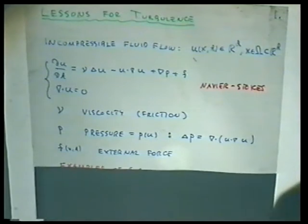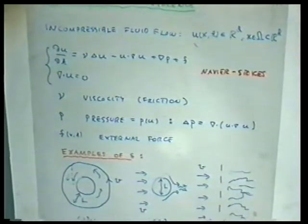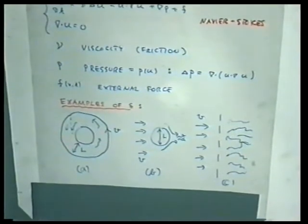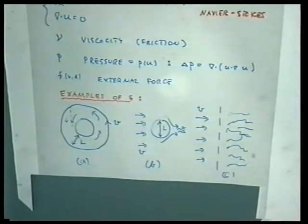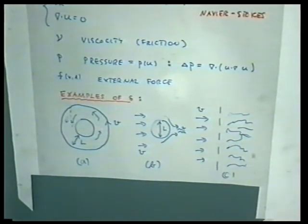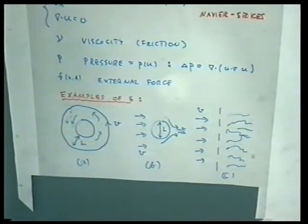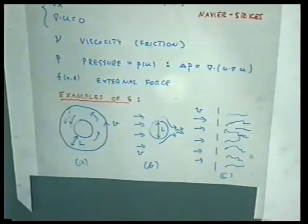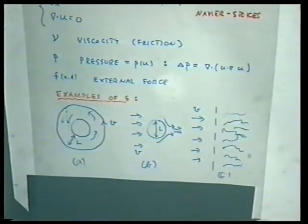To understand, we first need to understand what sort of situations we are after. Here are three experimental setups where you study turbulence in laboratories. The first is two concentric cylinders viewed from above — the inner cylinder is stationary and the outer wall is rotating, inducing motion in the liquid between them. In this system there is a characteristic length, namely the size of the system.